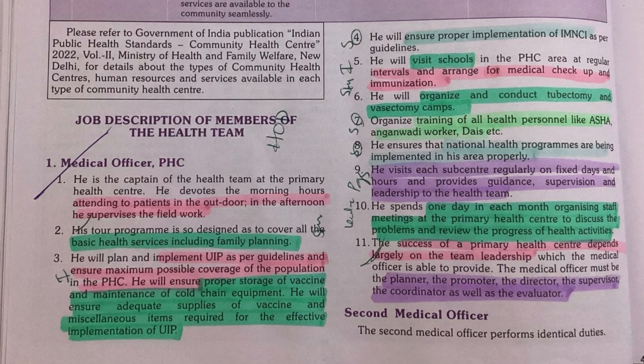To summarize: in the morning the Medical Officer attends patients and in the afternoon supervises field work. His schedule includes basic health services, minor surgeries (related to the family planning program — tubectomy and vasectomy camps), and treatment with medicines, which correlates to vaccinations — proper storage, cold chain, supplies as per UIP schedule. He also visits schools for medical checkups and immunization, and ensures proper implementation of IMNCI and national health programs.